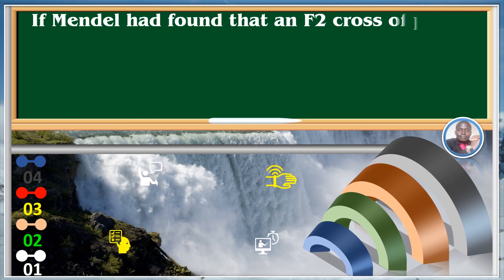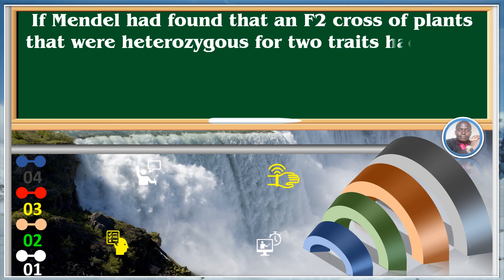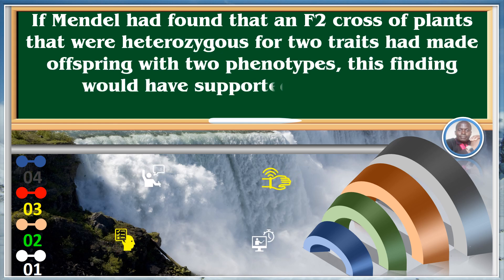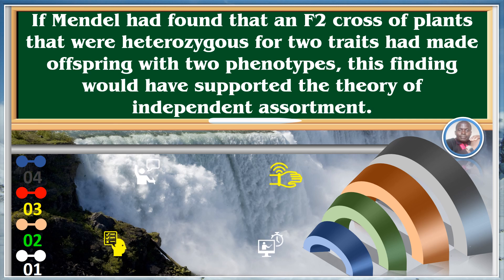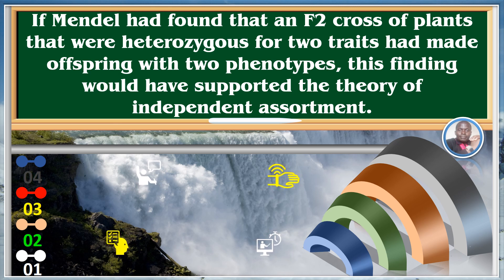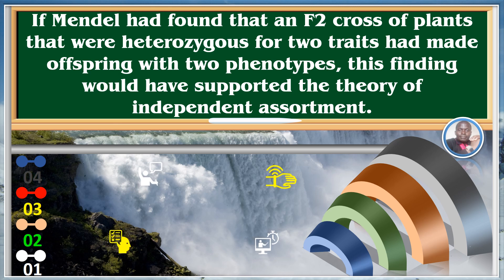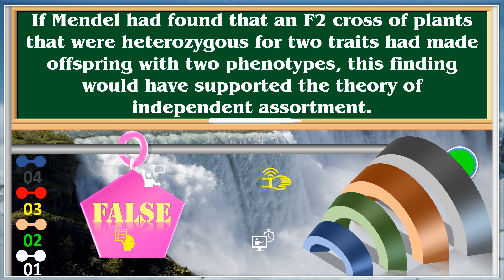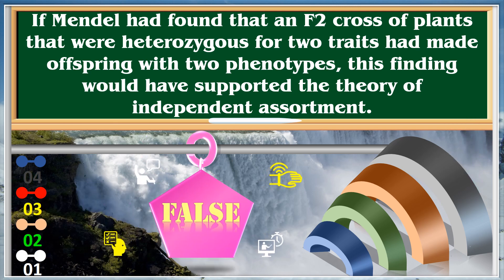If Mendel had found that an F2 group of plants that were heterozygous for two traits had made offspring with two phenotypes, this finding would have supported the theory of independent assortment. False.